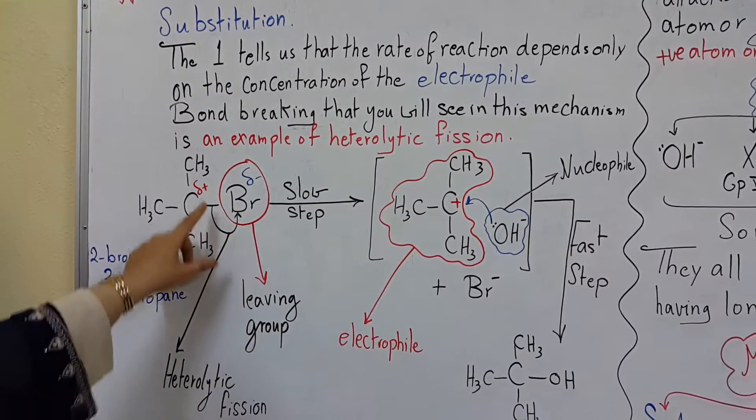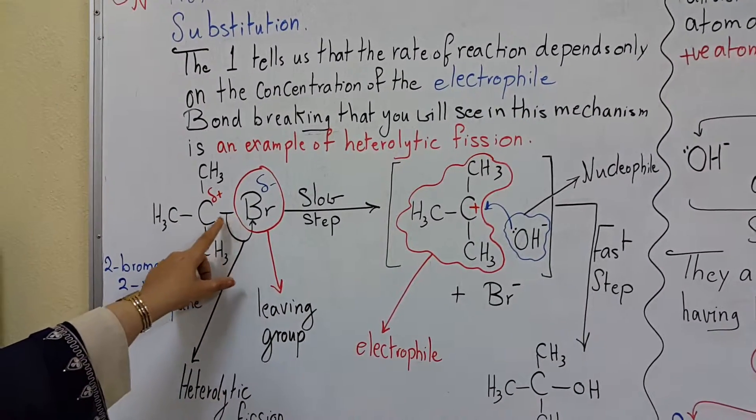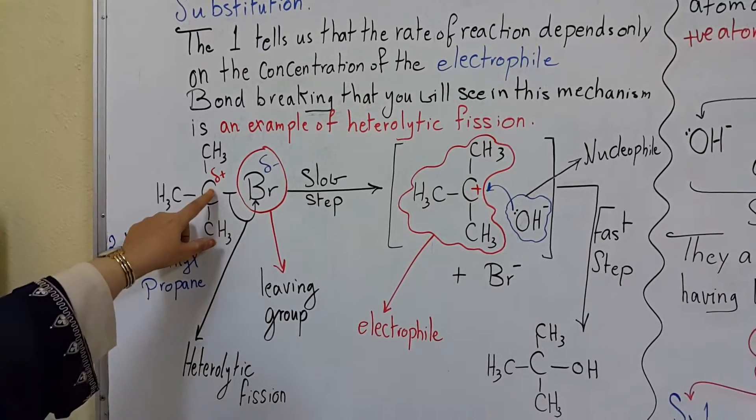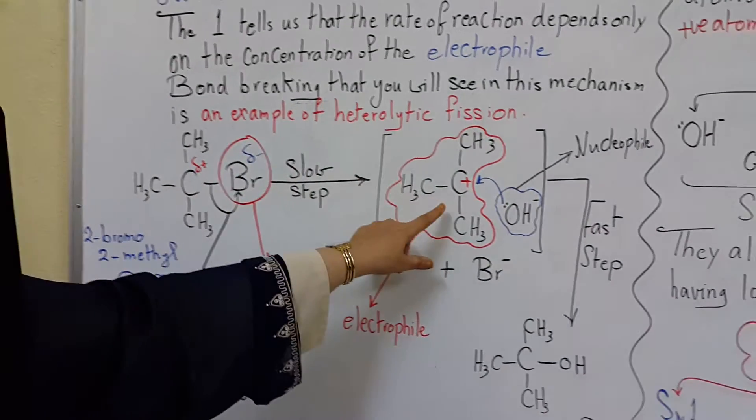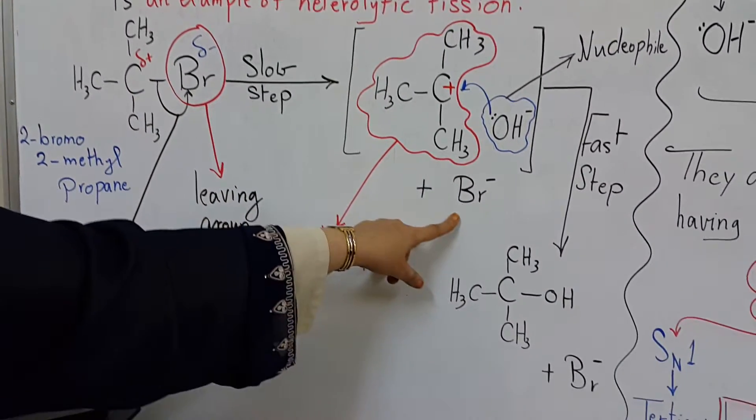Heterolytic bond fission will occur. Both electrons involved in the bond will go to the bromine atom. The carbocation intermediate will form, and bromine will leave as a bromide ion.